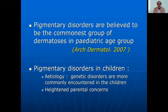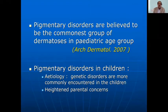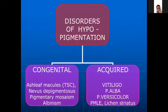These are believed to be the commonest group of dermatoses in the pediatric age group. They can be either genetic or acquired. Invariably it is the heightened parental concern which brings the children to consultation. The acquired ones are vitiligo, pityriasis alba, pityriasis versicolor, polymorphic light eruption, and lichen striatus.